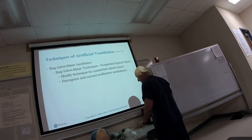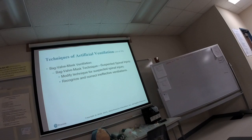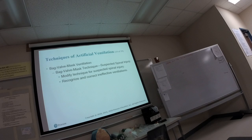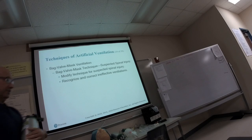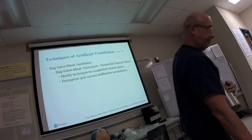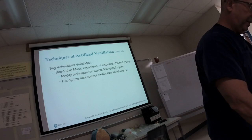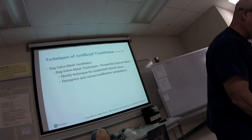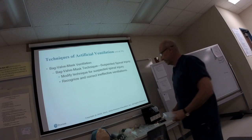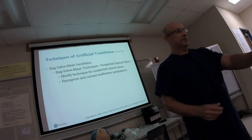Now let's talk about airway devices, starting with the oxygen cylinder. There are three ways to identify an oxygen cylinder. The first is the color: it's either completely green or completely silver.